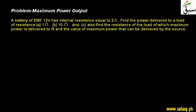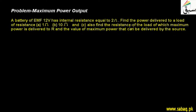Also find the resistance of the load for which maximum power is delivered to R — that is the third part. We have joined the electrical device with the battery, and we need to find the resistance to which maximum power will be delivered, as well as the value of that maximum power that can be delivered by the source, which is the battery.